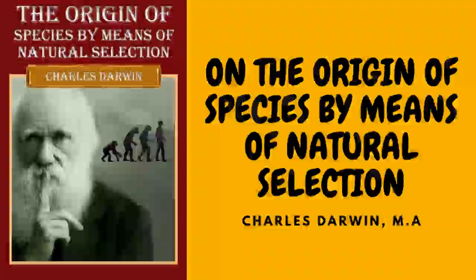There is also some probability in the view propounded by Andrew Knight that this variability may be partly connected with excess of food. It seems pretty clear that organic beings must be exposed during several generations to the new conditions of life to cause any appreciable amount of variation, and that when the organization has once begun to vary it generally continues to vary for many generations. No case is on record of a variable being ceasing to be variable under cultivation. Our oldest cultivated plants such as wheat still often yield new varieties; our oldest domesticated animals are still capable of rapid improvement or modification.